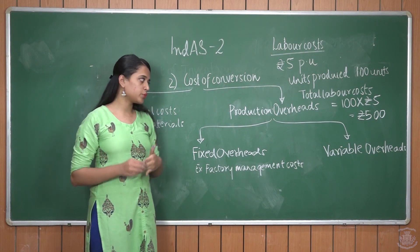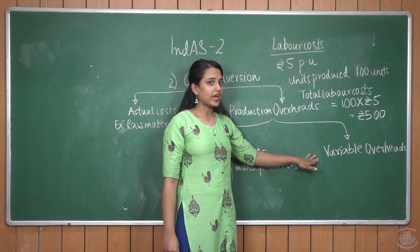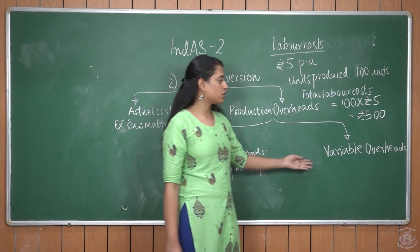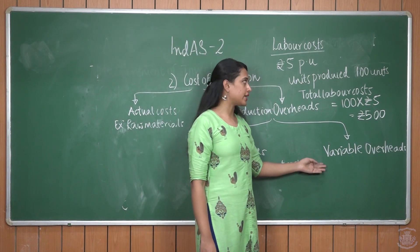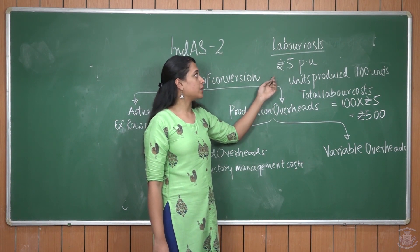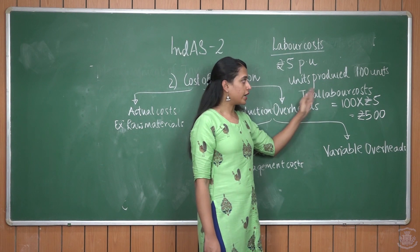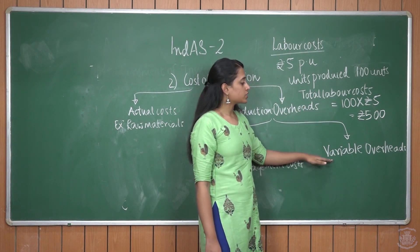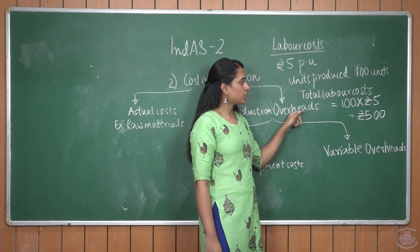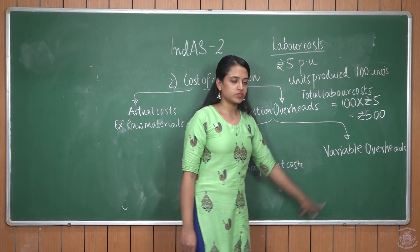Fixed overheads do not vary with the quantity produced. Variable overheads are expenses which vary directly with the quantity produced, for example indirect material and indirect labour. Taking an example where the labour cost is Rs. 5 per unit and units produced are 100 — since it is a variable overhead, it is directly absorbed on the 100 units produced. Therefore, total labour cost will be 100 × Rs. 5 = Rs. 500, which is absorbed into the cost of inventory.